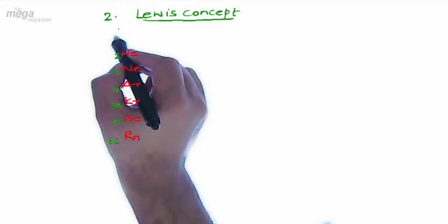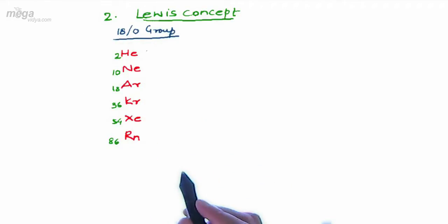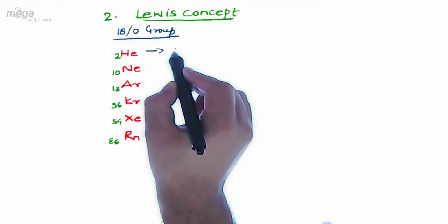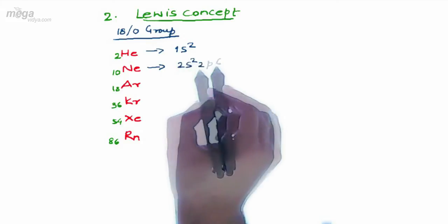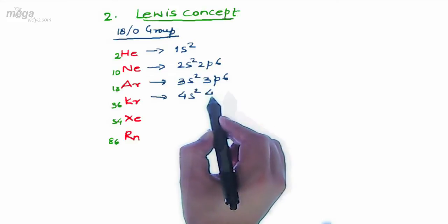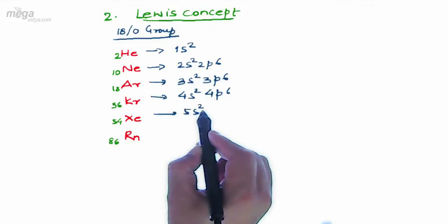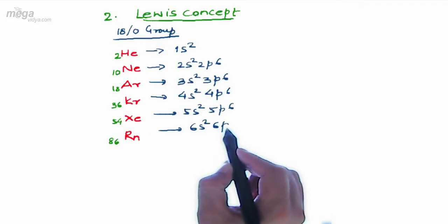Let us observe their valence shell electronic configuration. We can refer to the method of electronic configuration in the chapter atomic structure. Helium has a configuration of 1s2, Neon has a valence shell configuration of 2s2 2p6, Argon 3s2 3p6, Krypton 4s2 4p6, Xenon 5s2 5p6 and Radon 6s2 6p6.